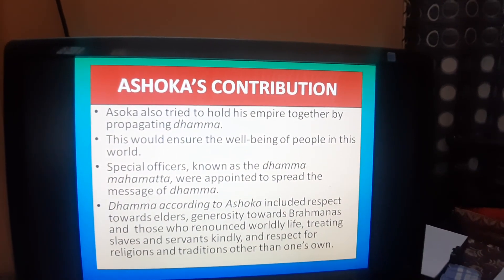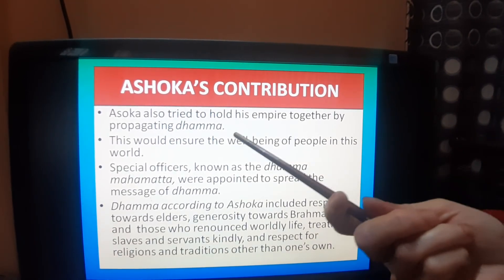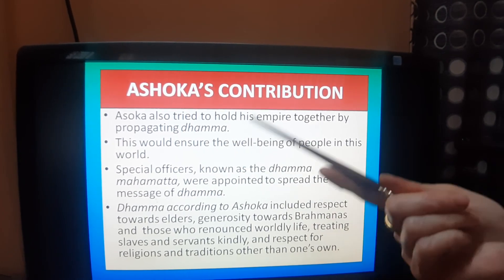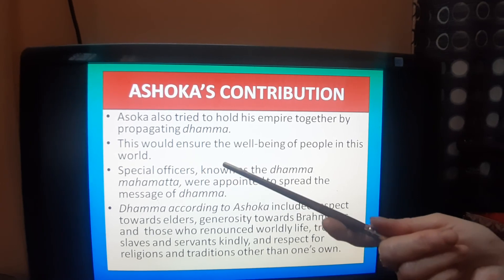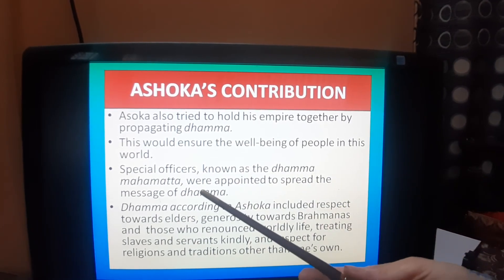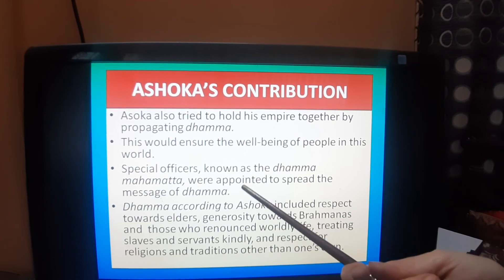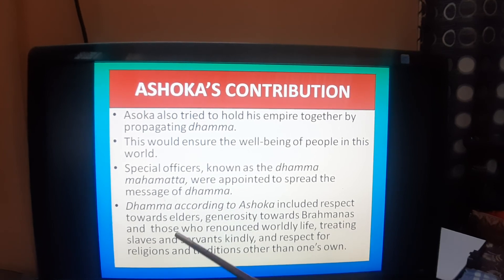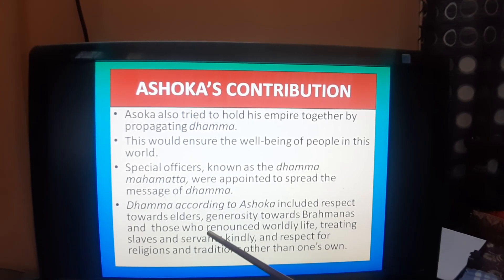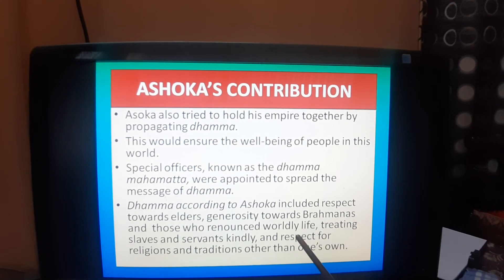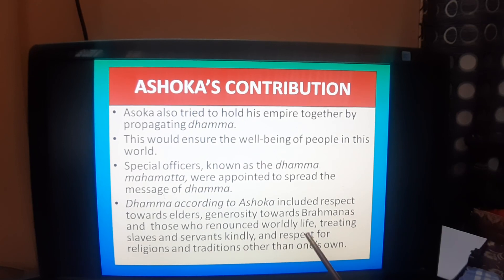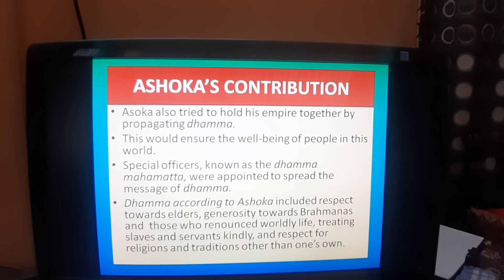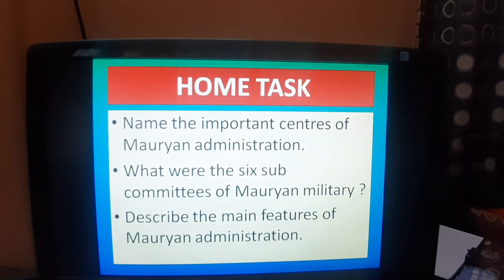Ashoka's contribution towards administration was that he tried to hold his empire together by propagating Dhamma, ensuring the well-being of people in this world. According to Ashoka, Dhamma includes respect towards elders, generosity towards Brahmanas and those who had renounced worldly life, treating slaves and servants kindly, and respect for religions and traditions other than one's own.